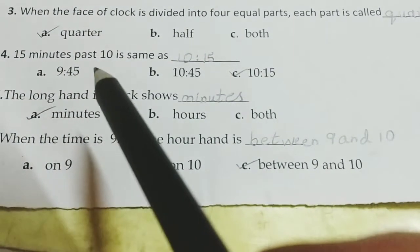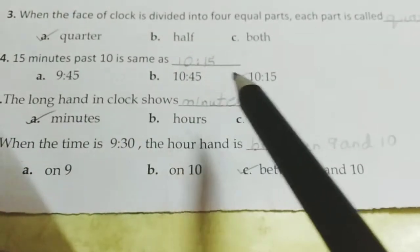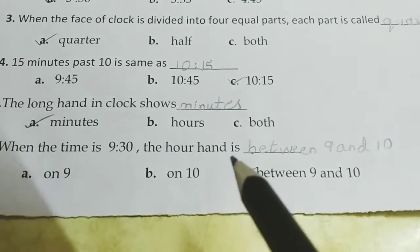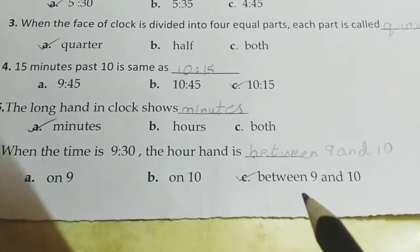15 minutes past 10 is same as. 15 minutes past 10 means after 10, 15 minutes is passed. That is we can say the time 10.15.